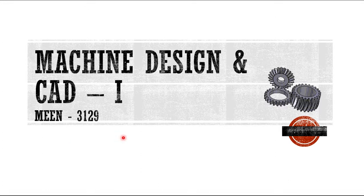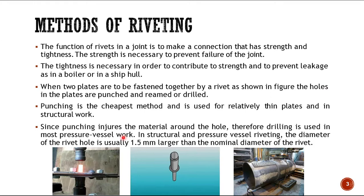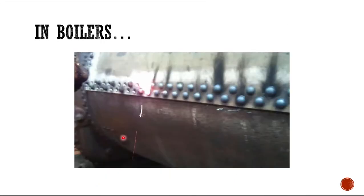In our last lecture we studied the parameters and basic theories related to riveted joints. We also learned about the types of permanent fastenings or permanent joints and temporary joints, then the method of riveting — either cold hardened or hot forged — and the material used. This is the boiler section which is basically the section of riveting.